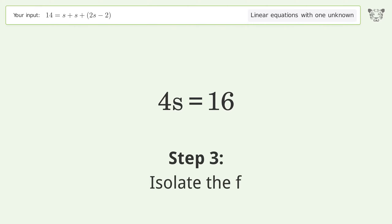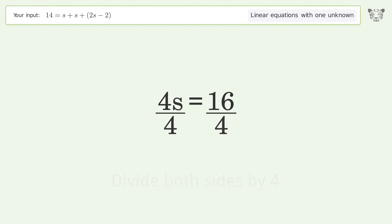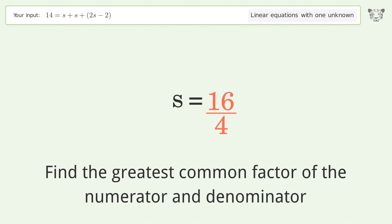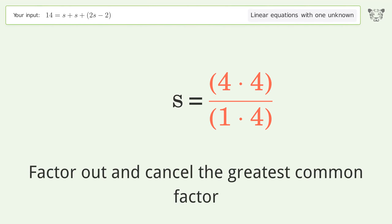Isolate the variable — divide both sides by four. Simplify the fraction. Find the greatest common factor of the numerator and denominator, then factor out and cancel the greatest common factor.